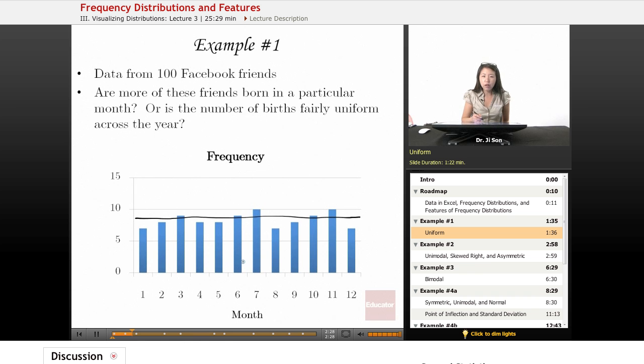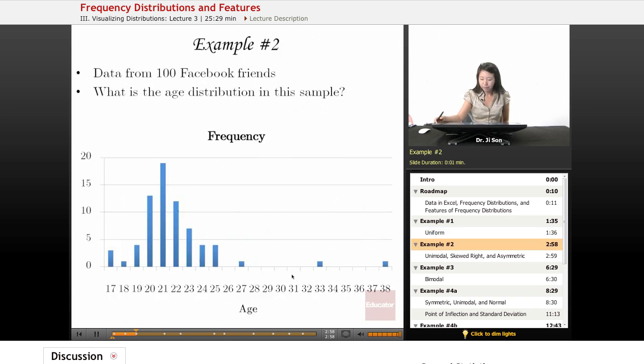Other uniform distributions also look like this sort of rectangle or flat shape. And these distributions might be anything from deaths occurring on days of the week. Is there any reason to believe that one particular day is more favorable to die on than another? Or in rolls of a six-sided dice, is there a particular reason to believe that one side might come up more frequently than another? Not if it's a fair-sided dice.